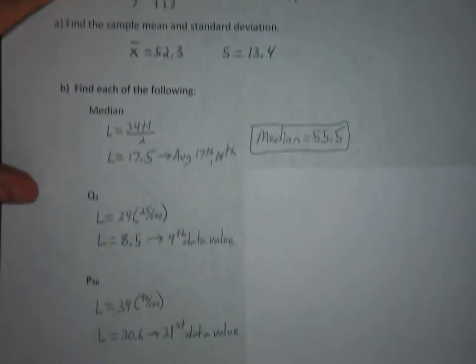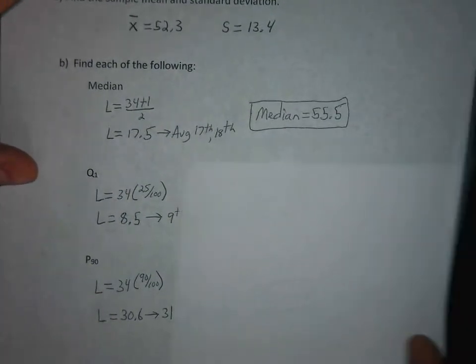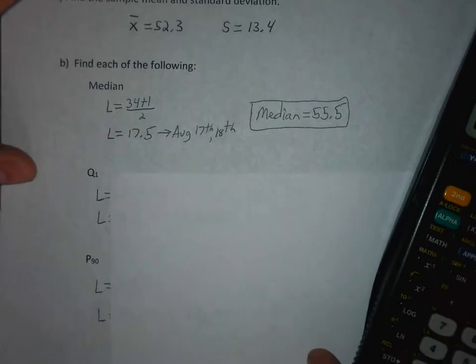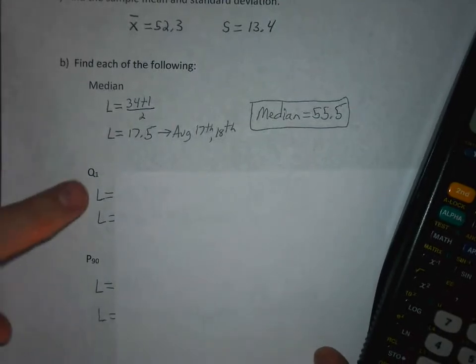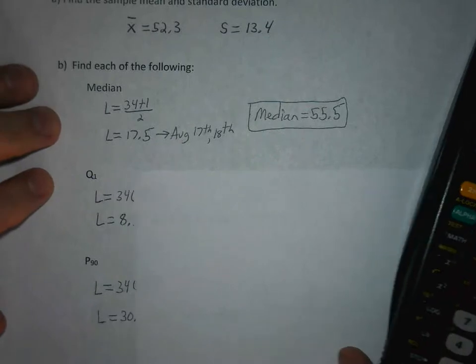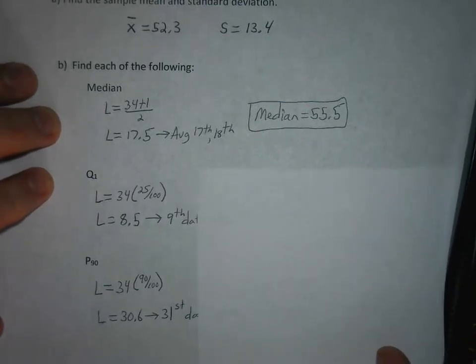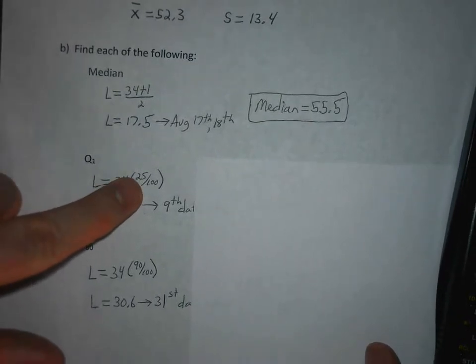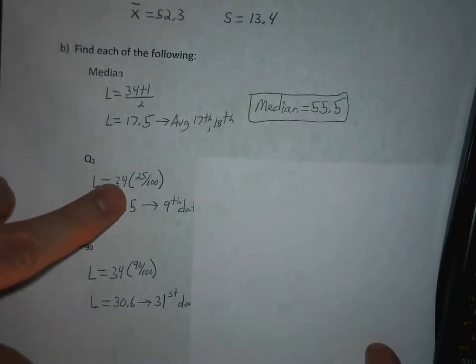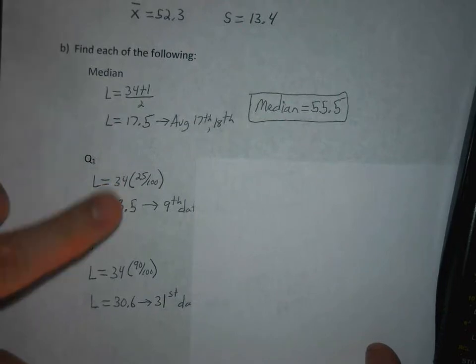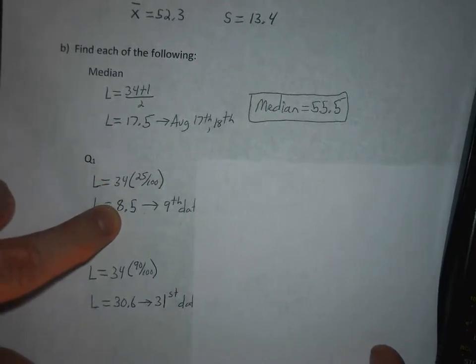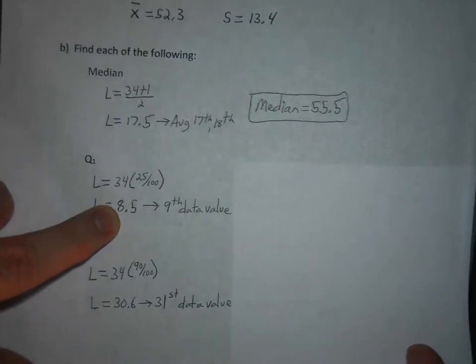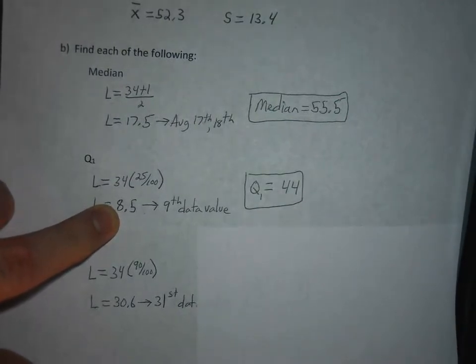Now finding Q1 and P90 - they're the same idea. You find the location of them using n times whichever quartile or percentile you're at. So Q1 is the 25th percentile, so 0.25 times 34, which is your sample size, gives you 8.5. That means you round up to the ninth data value, and that'll give you Q1 is 44. On the calculator that also gives you Q1 is 44.